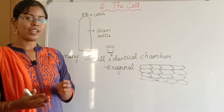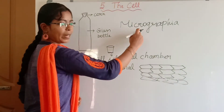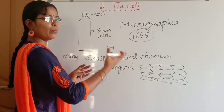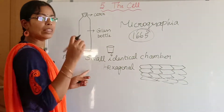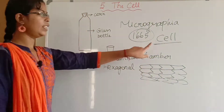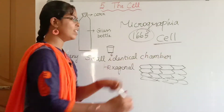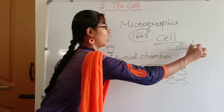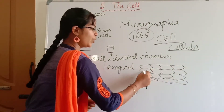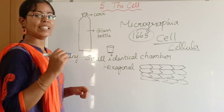Based on his observations, he published a book called Micrographia in the year 1665. In that book, he used the term 'Cell' for the first time. The word 'cell' is derived from the Latin word 'cellula', meaning small chamber — little rooms, little chambers.